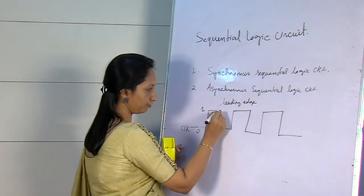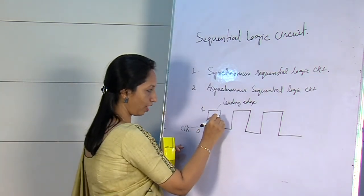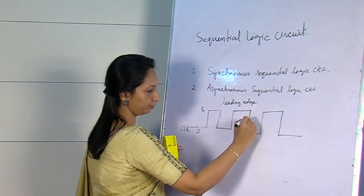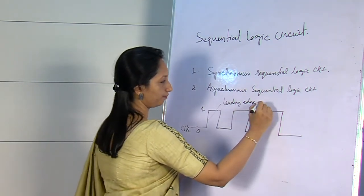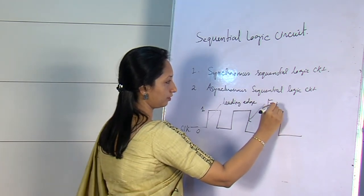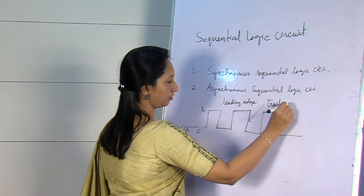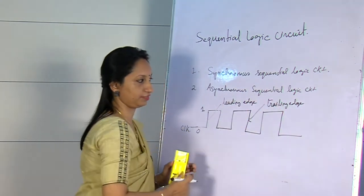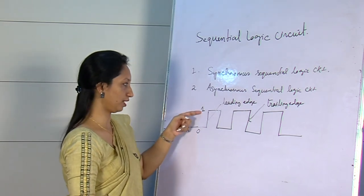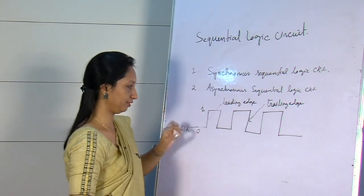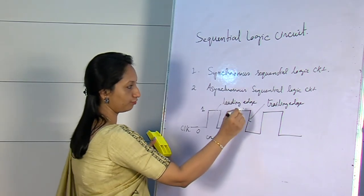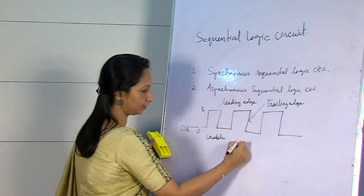When there is a transition from high to low, that is 1 to 0, then this edge is called the trailing edge, or negative edge. The time during the transition of 0 to 1 is called enable, and the transition from 1 to 0, that is high to low, is called disable.